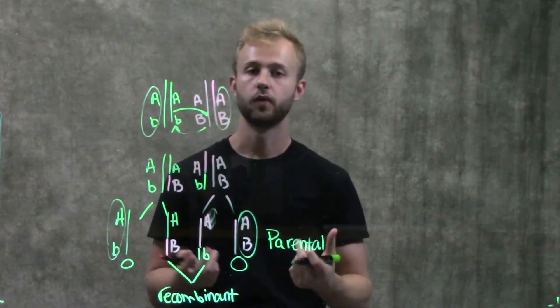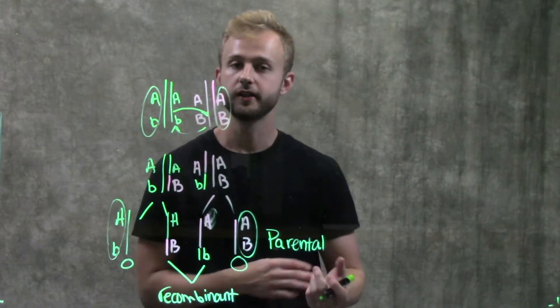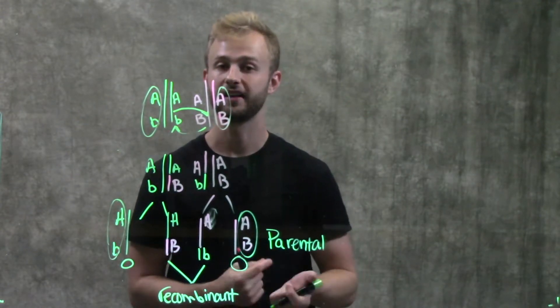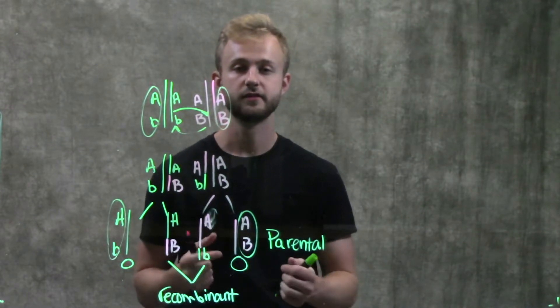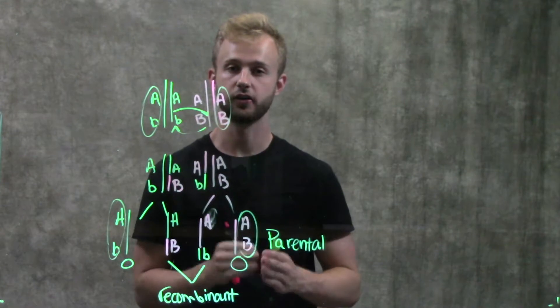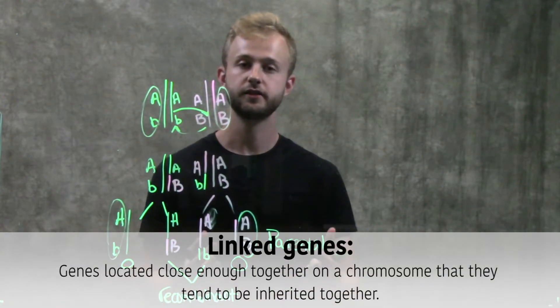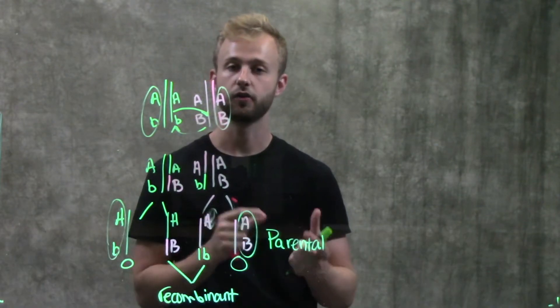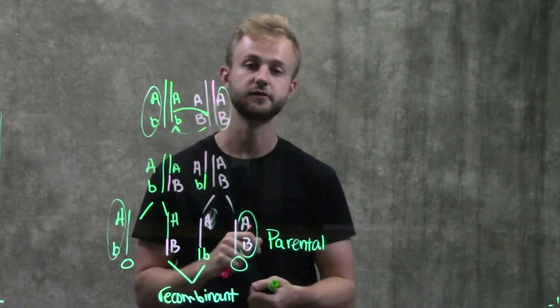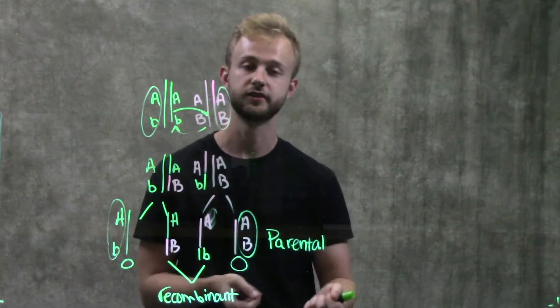Now that we understand what recombination is, we can look at some cases in which recombination might not happen. When we have genes that are linked, that means they're going to be located very close together on the same chromosome. The closer two genes are on a particular chromosome, the less likely it is that crossing over is going to occur in the space between those two genes and actually separate them.